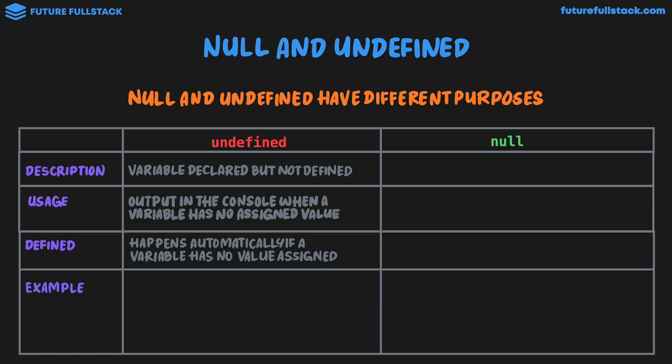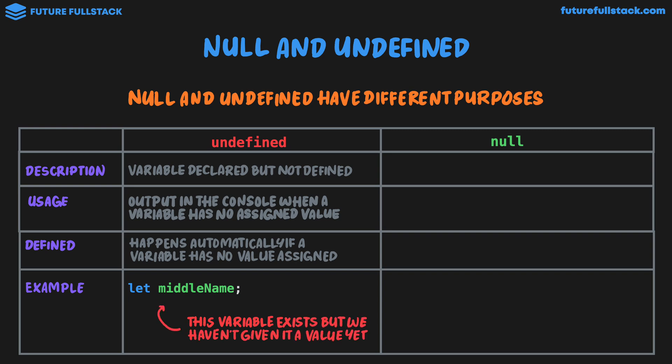An example is when we declare a variable like this: let middleName. This variable exists, but we haven't given it a value yet. Just a small note: undefined does occur in other places inside JavaScript. At the moment, we're just going to see it in the context of variables when we try to access a variable that has no assigned value, but we'll see later that undefined crops up in other places in JavaScript when we're trying to access values.